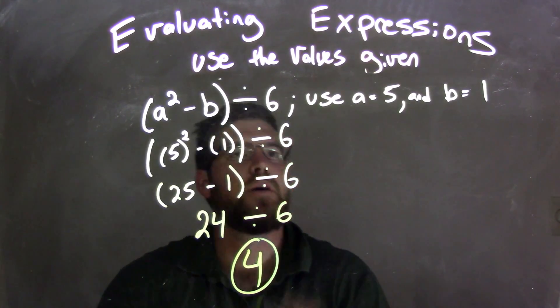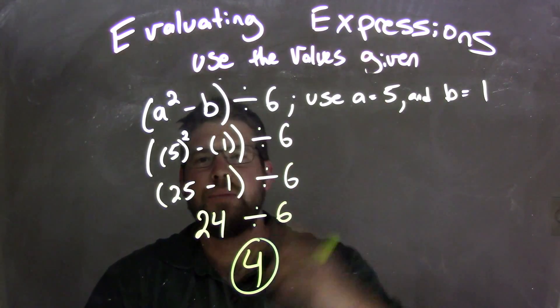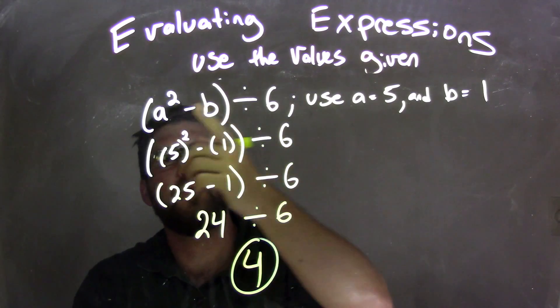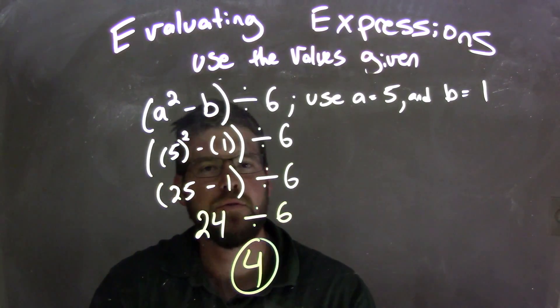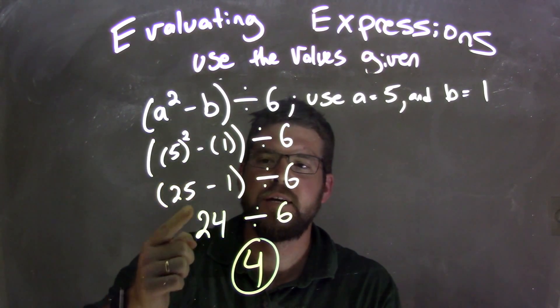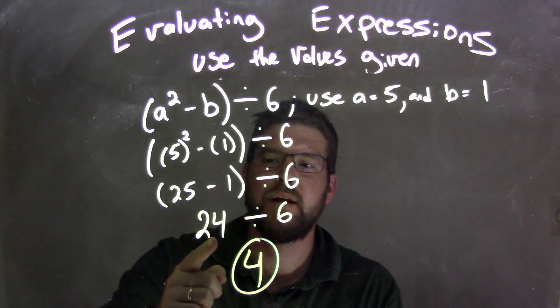So again, let's recap. We're given a equals 5 and b equals 1. We need to substitute those in for the corresponding variables. We then squared the 5 first to get 25. We then subtracted 1 to get 24, and 24 divided by 6 to get 4.